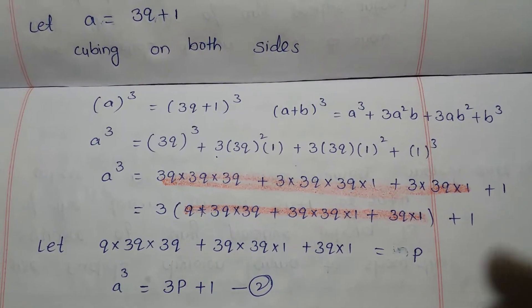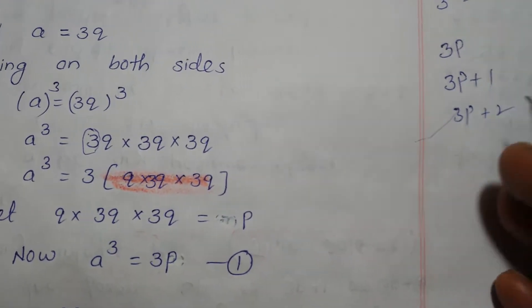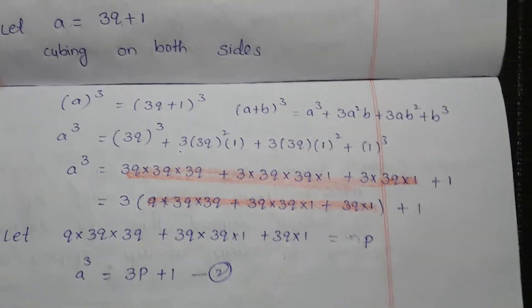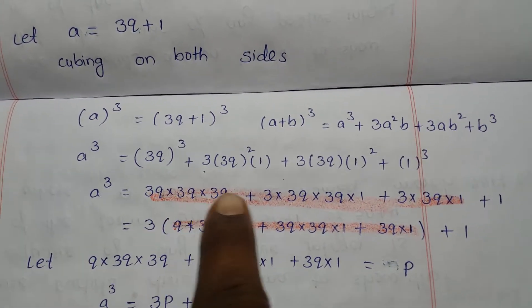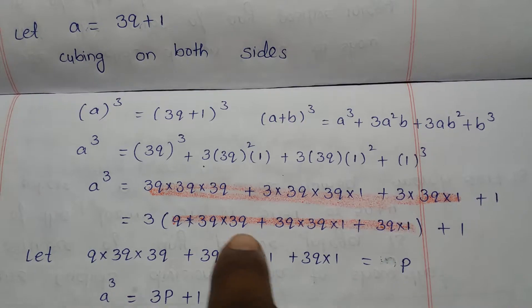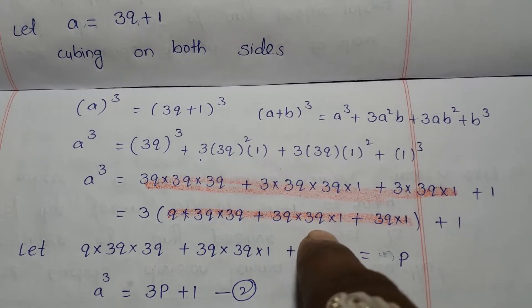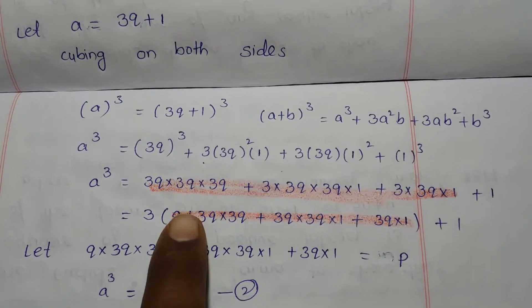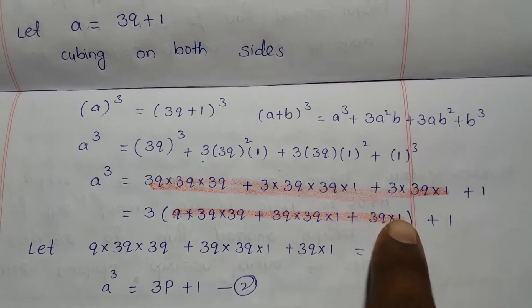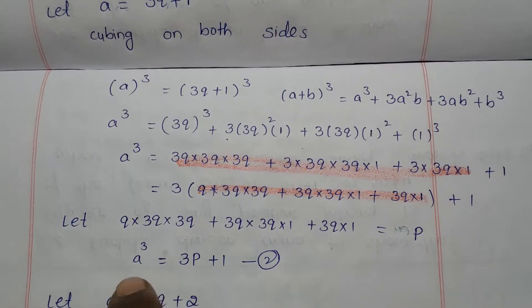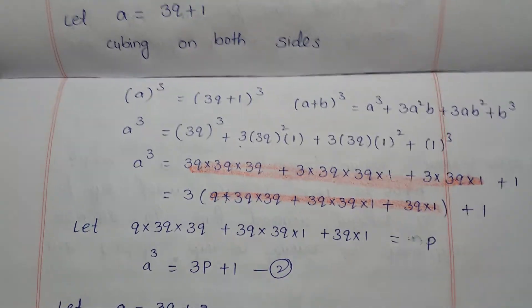We need to convert this into the form 3p plus 1. Since 1 appears at the end, we write 3 outside a bracket containing the remaining terms: q into 3q into 3q into 3q plus 3q into 3q into 1 plus 3q into 1, and then plus 1. We let that entire bracketed part be P, so a cubed equals 3P plus 1. Let this be equation number 2.